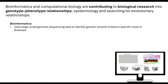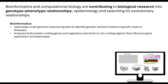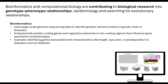For bioinformatics, this involves using large-scale genome sequencing data to identify genetic variants linked to a specific trait or disease. It includes analysing both the protein-coding genes and the regulatory elements in non-coding regions — for example, regulatory genes producing repressor proteins that influence gene expression and therefore influence phenotypes. Examples include identifying genes associated with characteristics like height, eye colour, or a predisposition to disease such as diabetes.